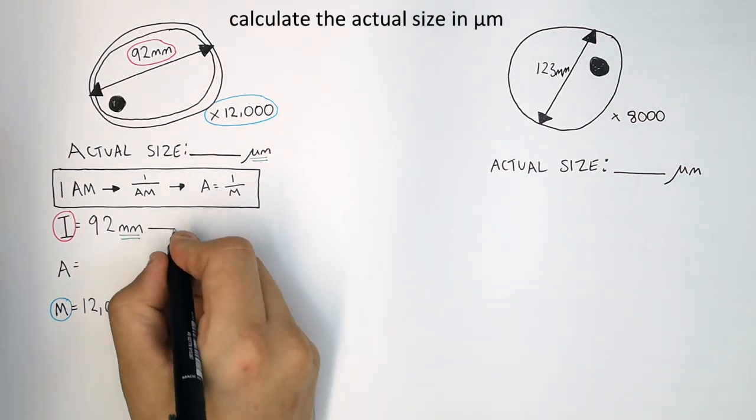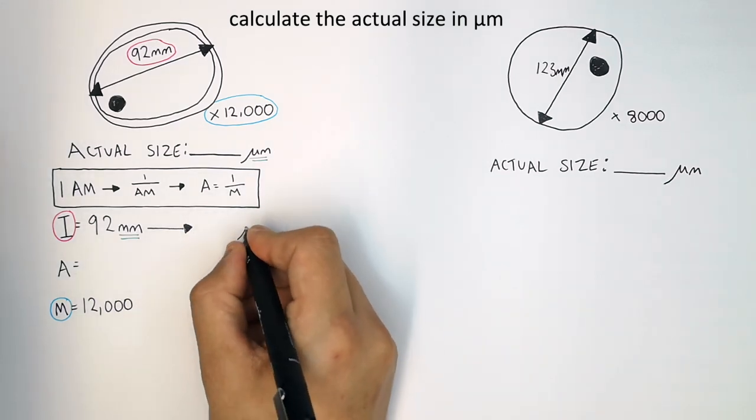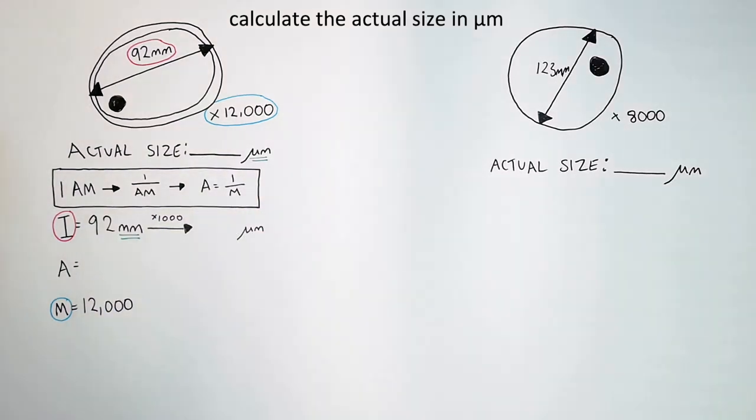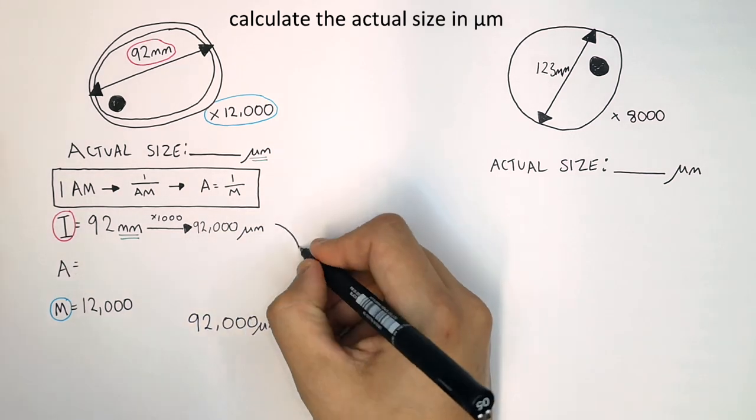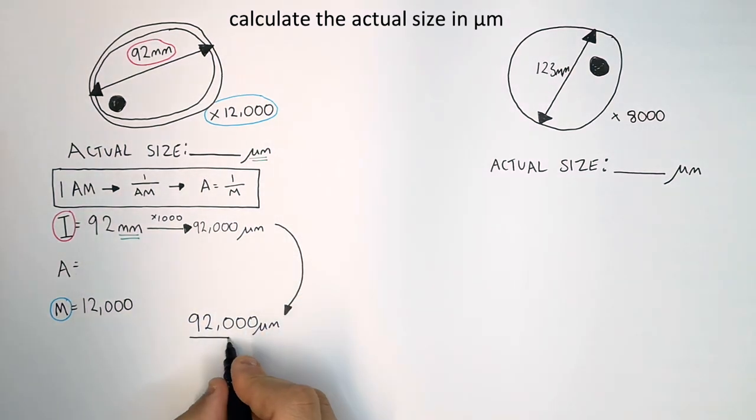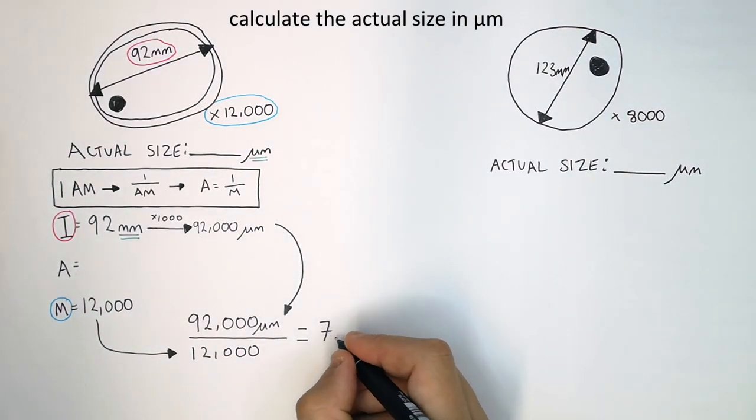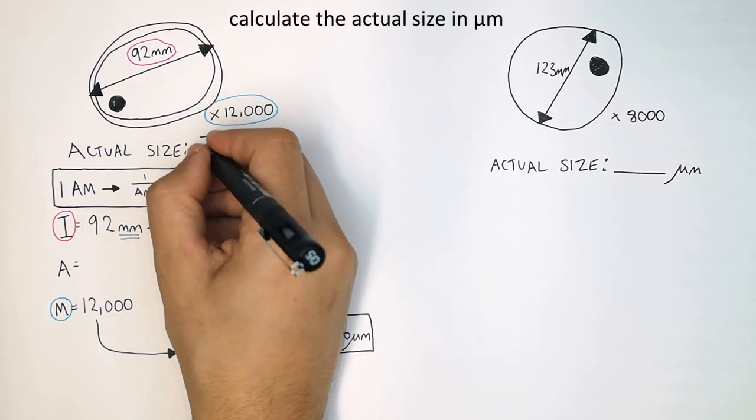So you must convert the millimeters into micrometers by timesing by a thousand. That gives you 92,000 micrometers. Now you can use your 92,000 micrometers, not the millimeters, to divide it by 12,000, which is the magnification. Now I'll then give you the answer of the actual size of the cell in micrometers, which is 7.6 micrometers.